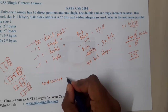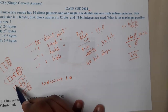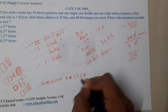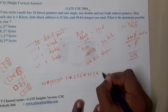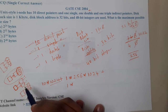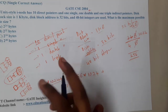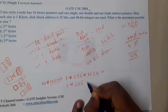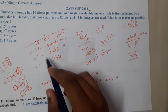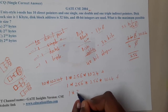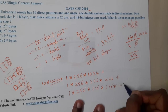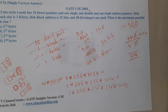With the single indirect, we get 256 items each of 1024 bytes. The double indirect gives 256 × 256 × 1024 bytes. The triple indirect gives 256 × 256 × 256 × 1024 bytes.